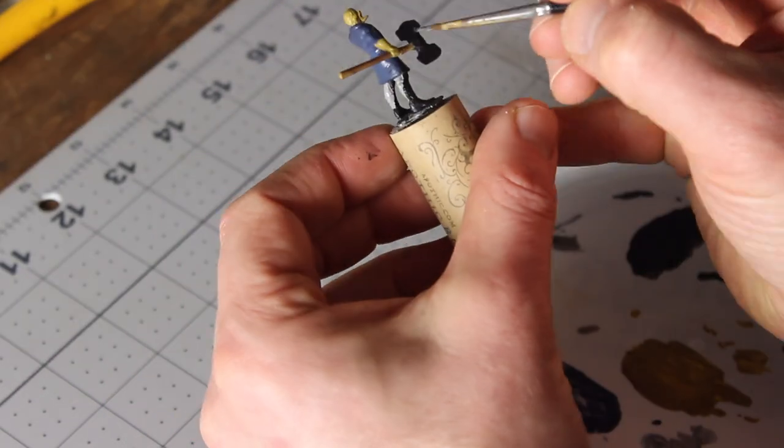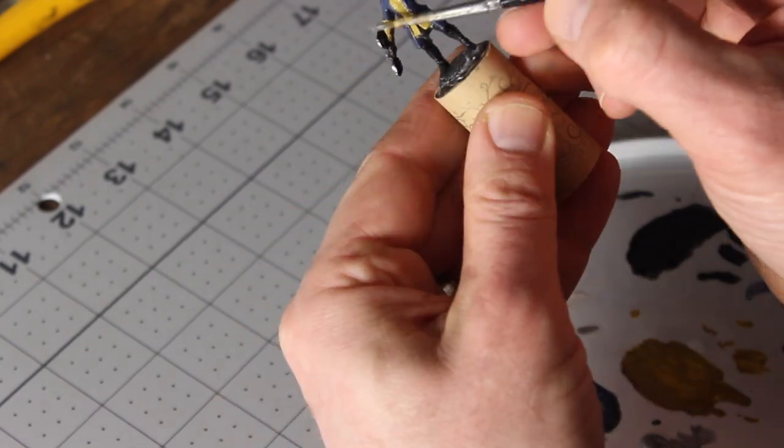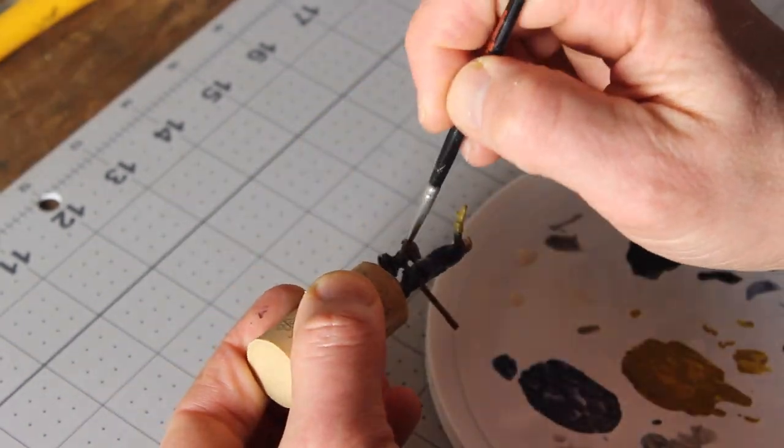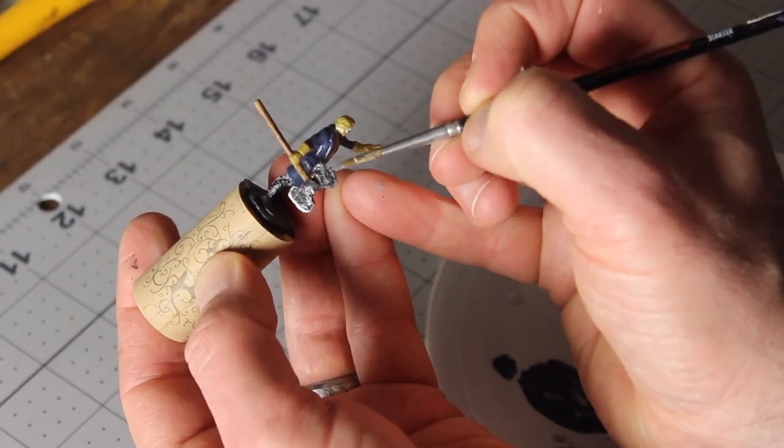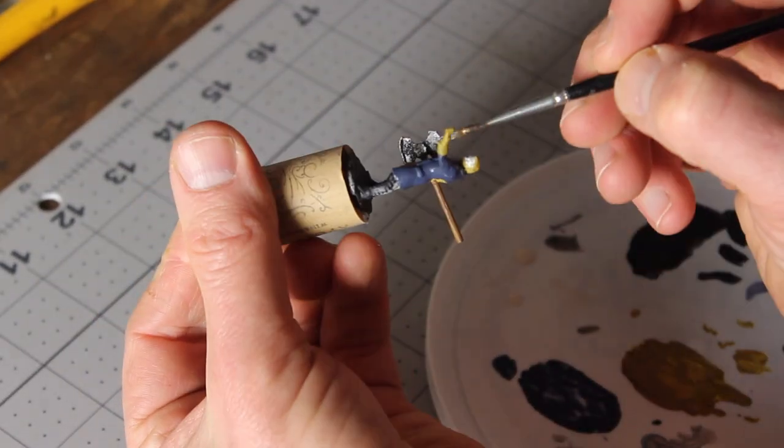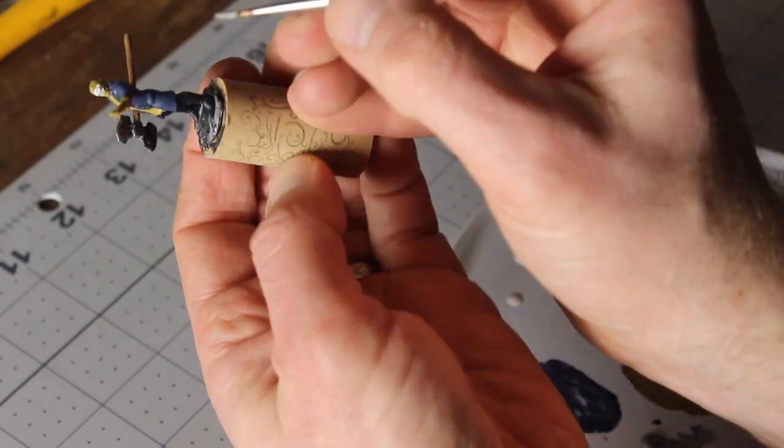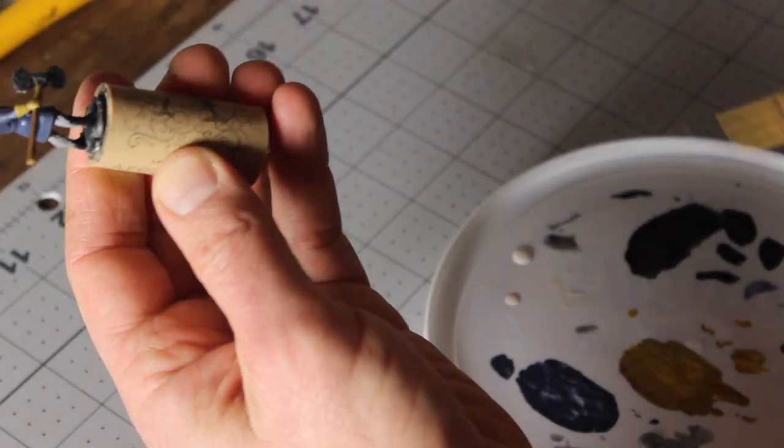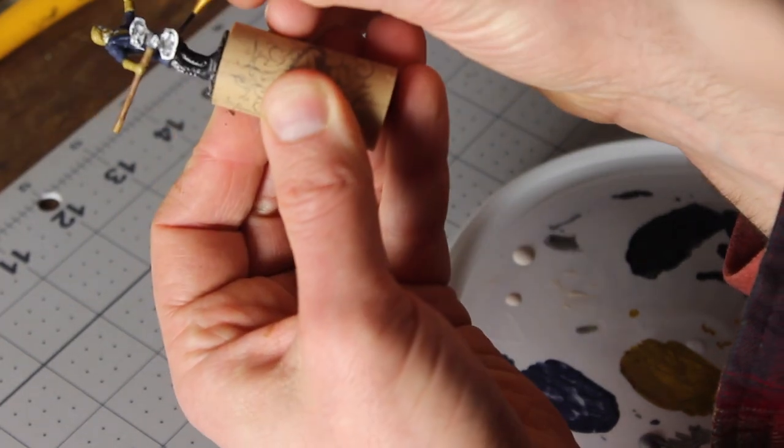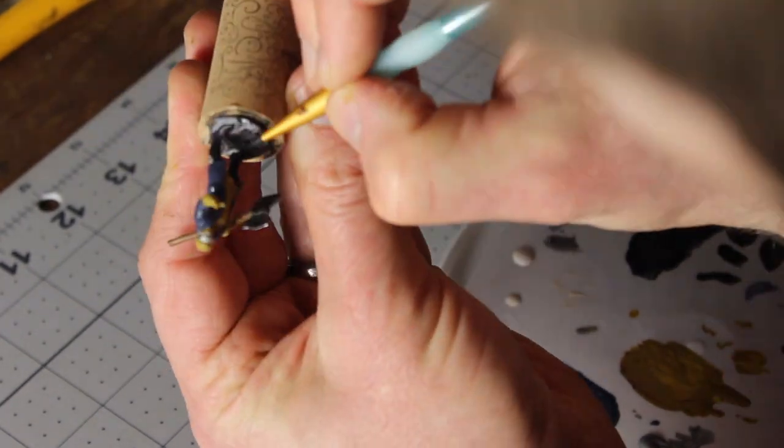Why did I make a real axe blade out of real metal and then paint it? Well, part of it is because I've got to try things out. I also have that ugly glob of super glue to cover up.